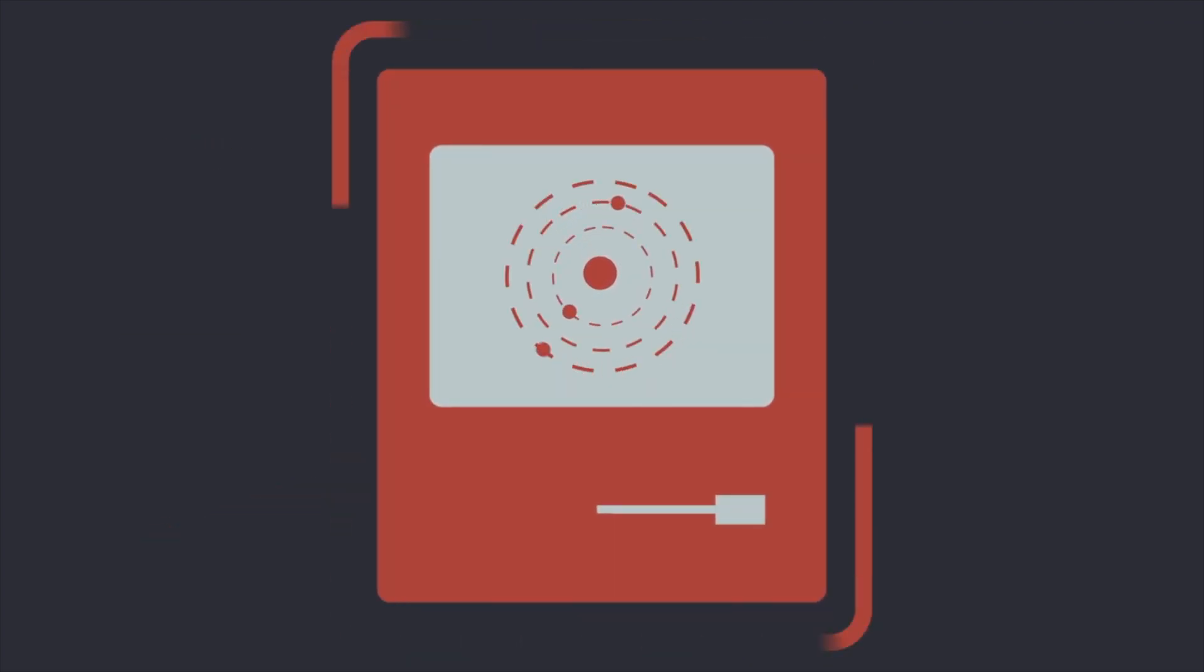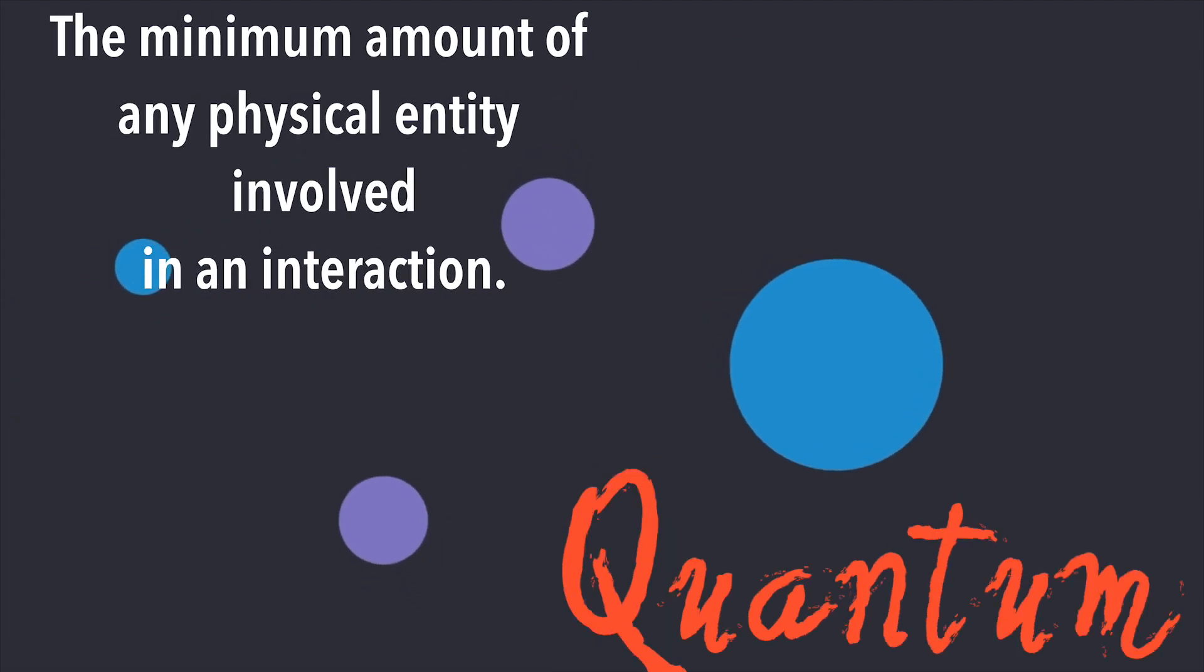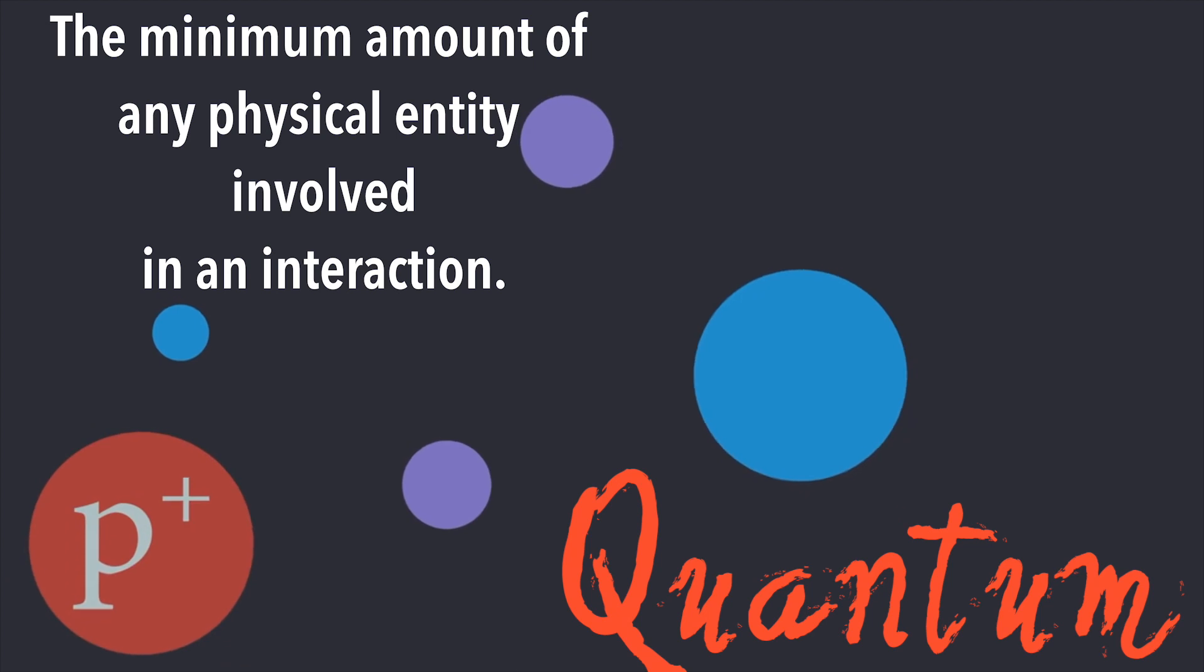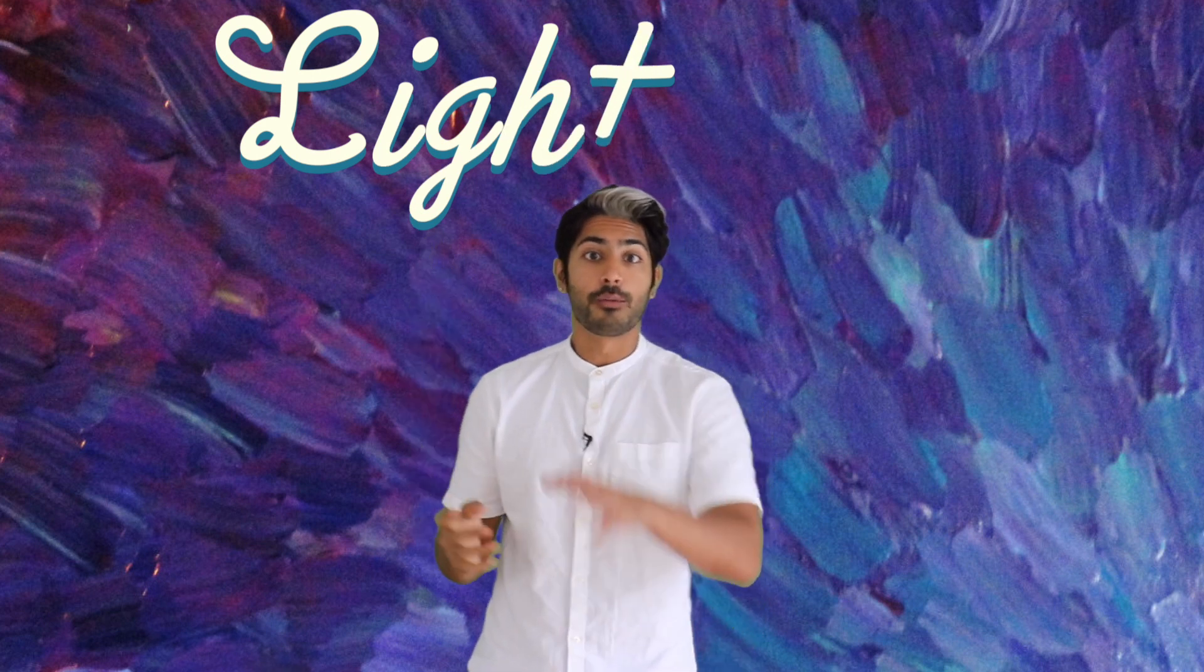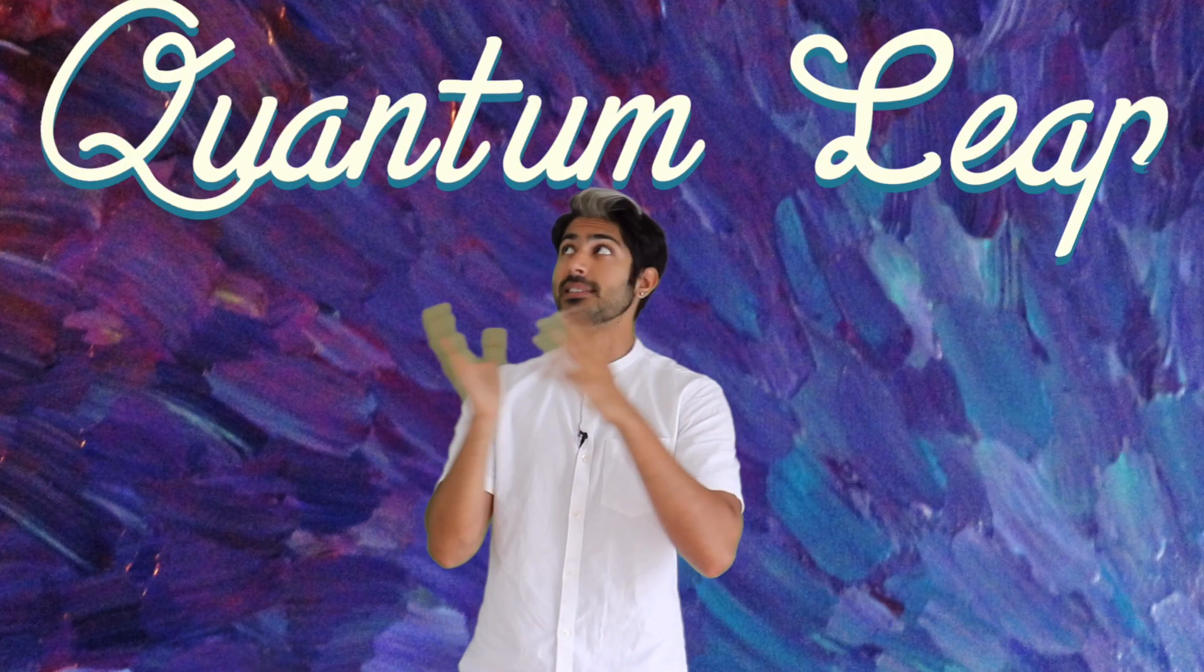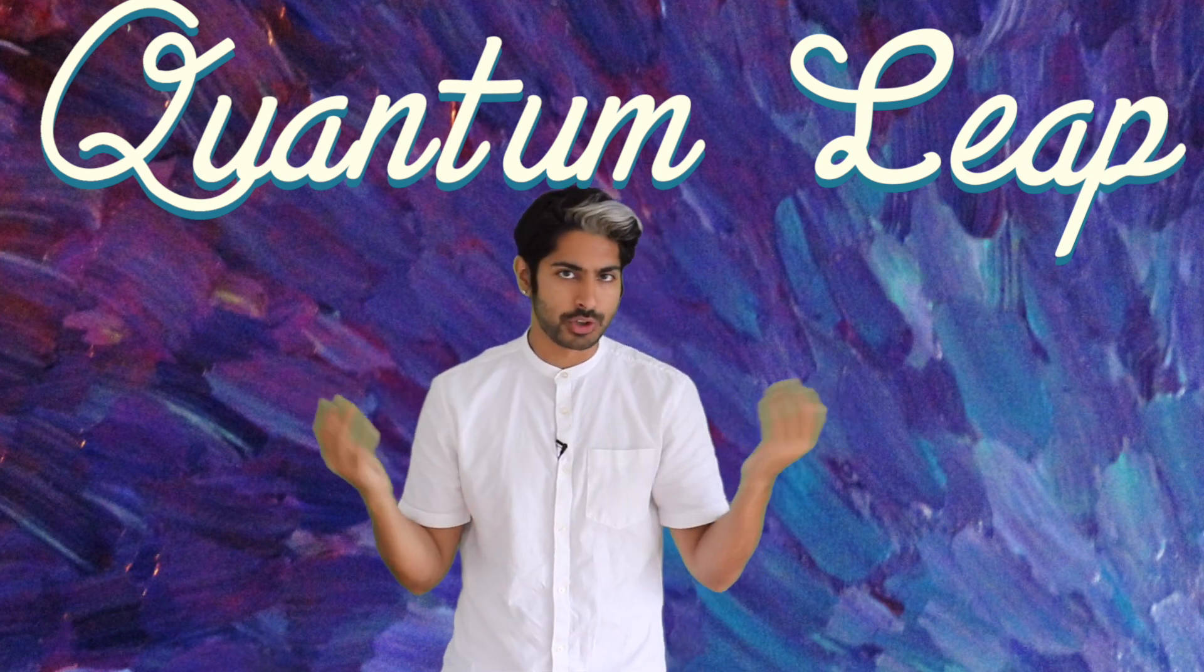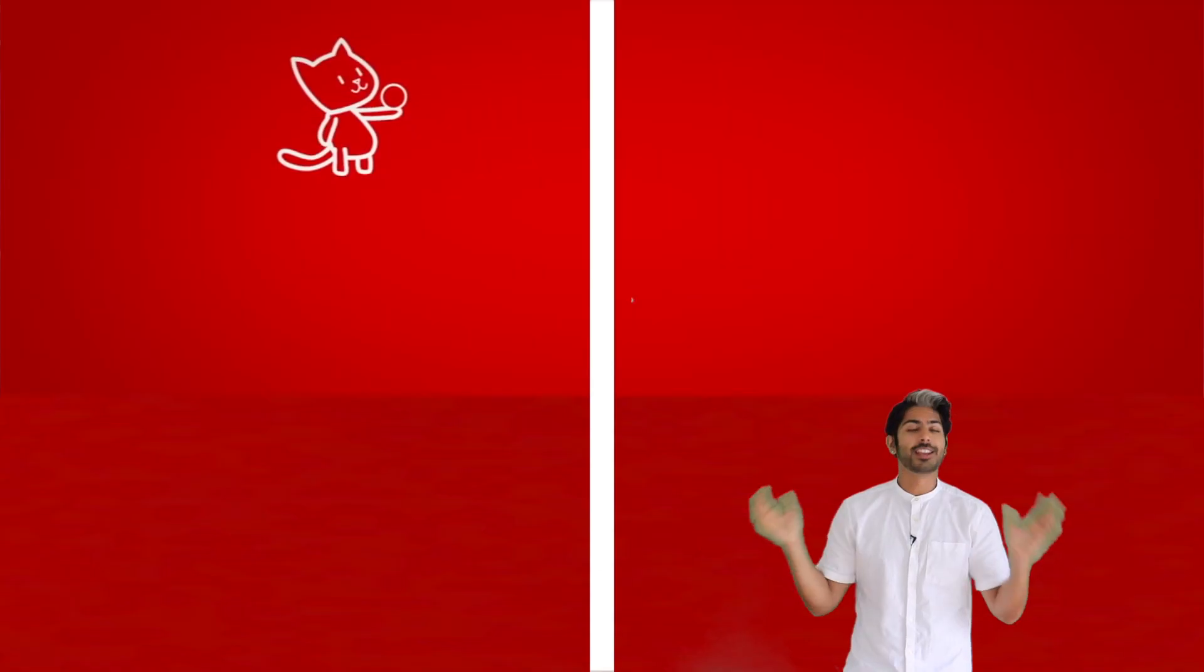The word quantum in physics means the minimum amount of any physical entity involved in an interaction. So a photon is a single quantum of light, for example. That's its real scientific definition, but it's also used colloquially sometimes to mean the opposite, like quantum leap or by anything Deepak Chopra says. The aficionados in the world of quantum physics have somehow hijacked the word for their own use.